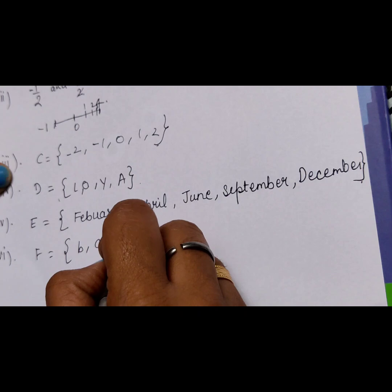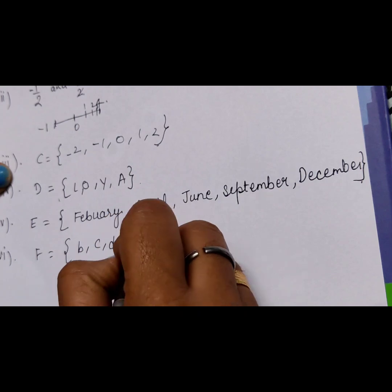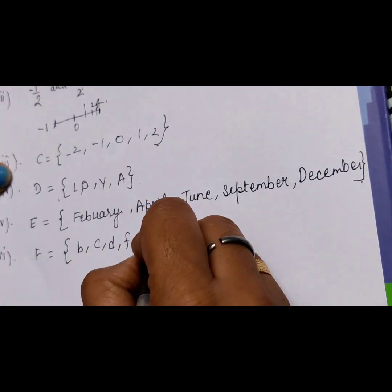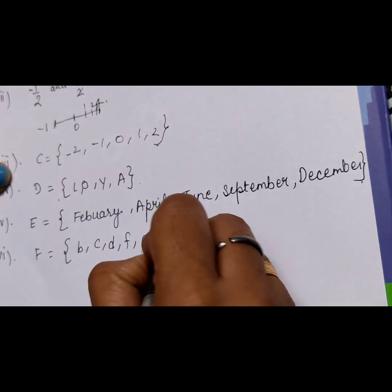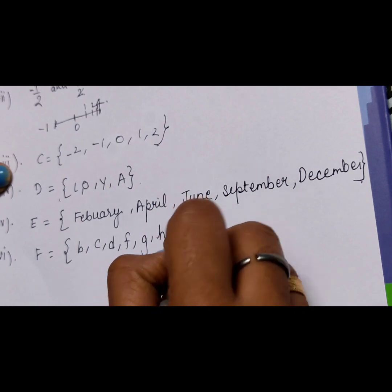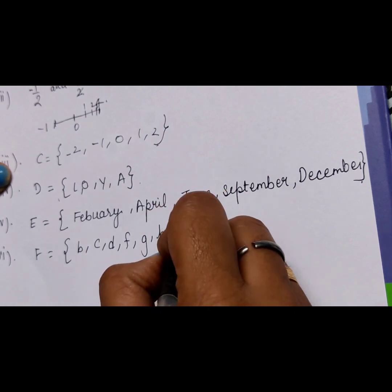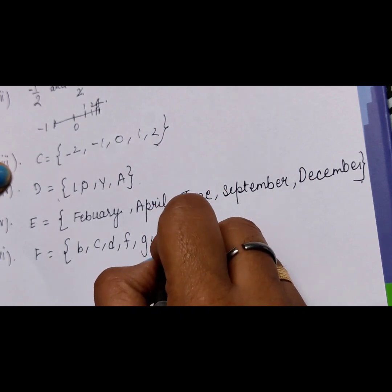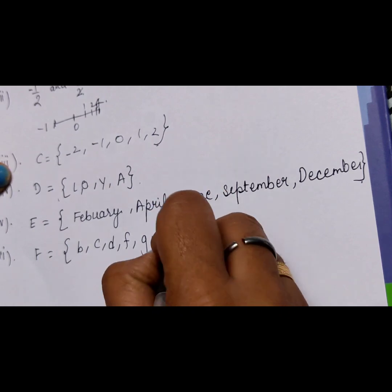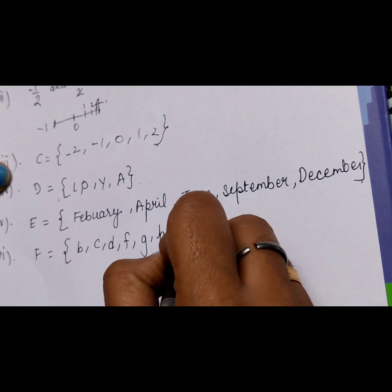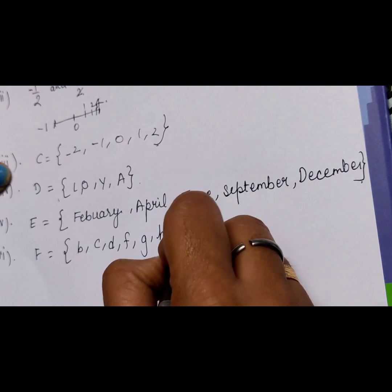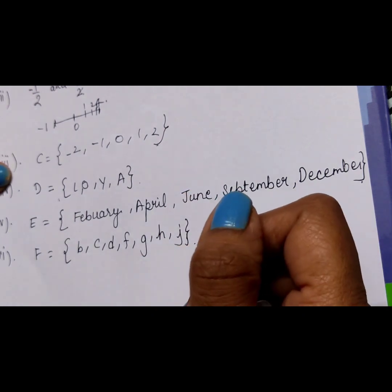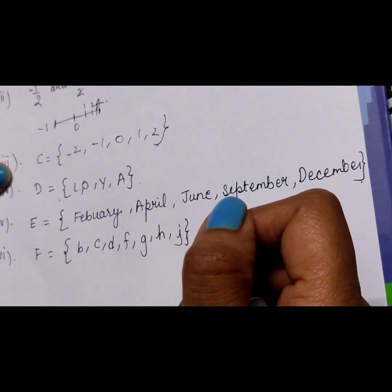The sixth part: consonants in the English alphabet before the letter K, not including vowels — so B, C, D, F, G, H, J.